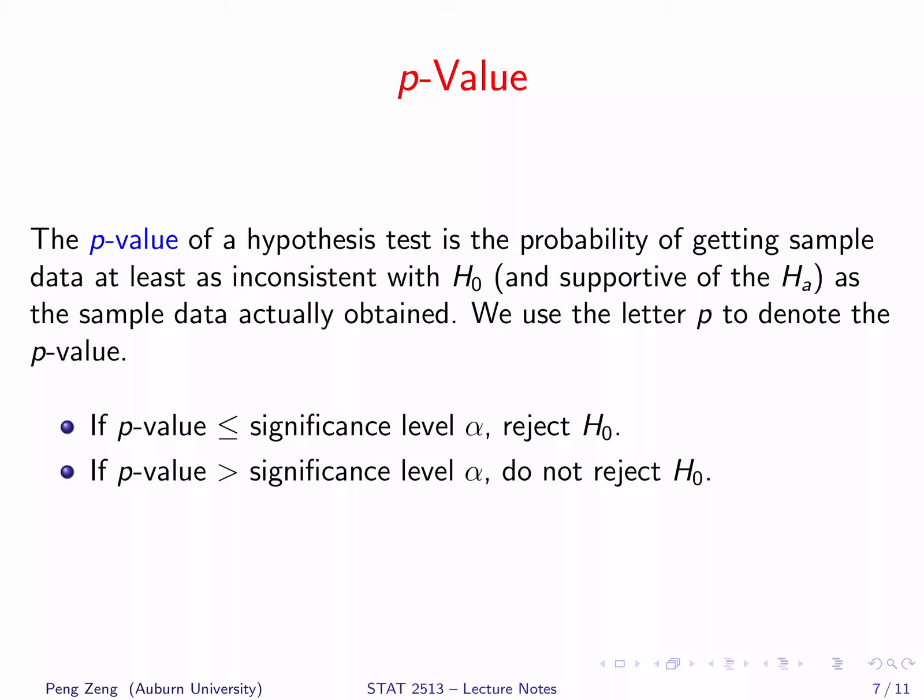The p-value of a hypothesis test is the probability of getting sample data at least as inconsistent with H0 — or as unsupportive of H0 — as the sample data actually obtained. We use the letter p to denote the p-value. The p-value is computed assuming the null hypothesis is true. How to compute the p-value depends on the alternative hypothesis: if it is less than a value, p-values are the probability less than the test statistic; if greater than a value, p-values are the probability greater than the test statistic. To draw a conclusion, compare the p-value with the significance level. If the p-value is less than or equal to alpha, reject H0; otherwise, do not reject H0.